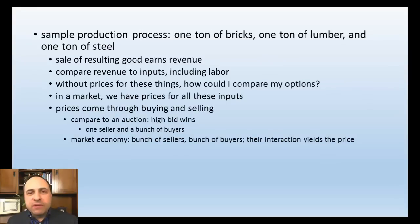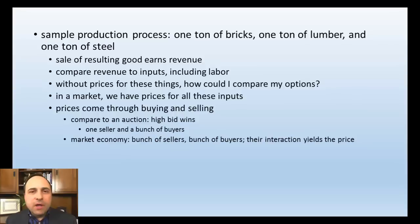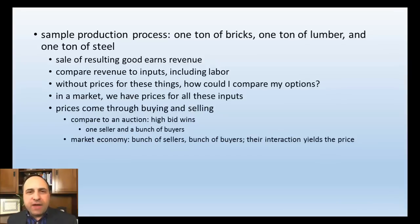Consider a sample production process that produces some consumer good X, using one ton of bricks, one ton of lumber, and one ton of steel. You combine these resources, produce consumer goods, sell them, and earn revenue. As an entrepreneur, you compare the revenue earned against what you spent on bricks, lumber, and steel. If you earn more than you expend, you're doing well. If you're earning a very small profit or spending more than you're earning, you'll need to adjust your production decisions — maybe less of one thing, more of another.